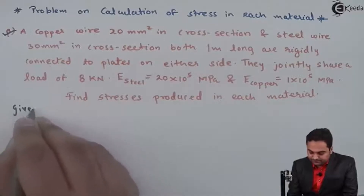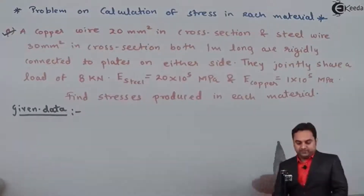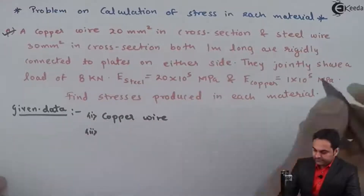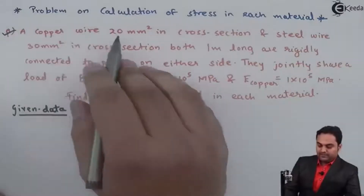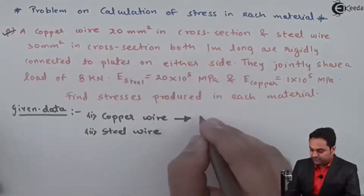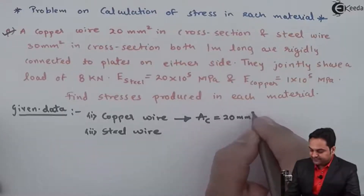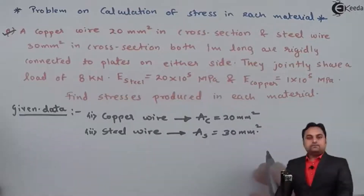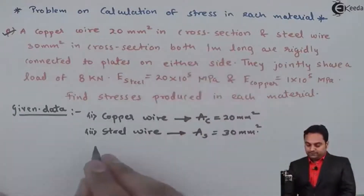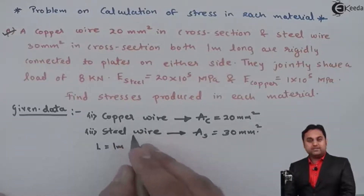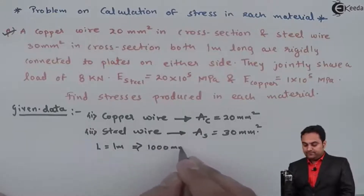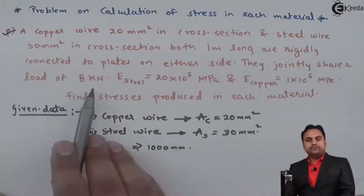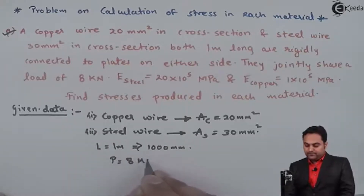I'll write the data: two different materials are given — copper and steel. The area of the copper wire, denoted with suffix C, is 20 mm square. The area of the steel wire, suffix S, is 30 mm square. The length of both is 1 meter, which is 1000 mm. They are rigidly connected to plates on either side.